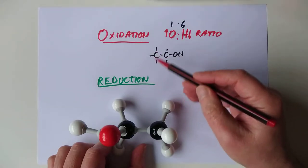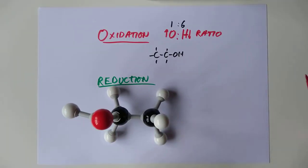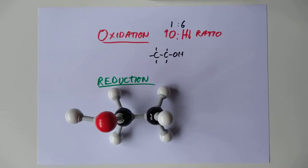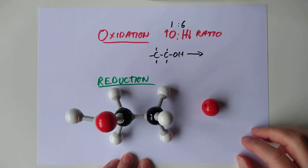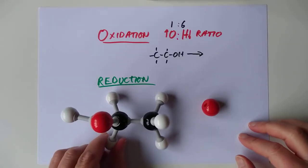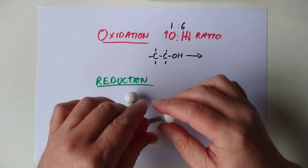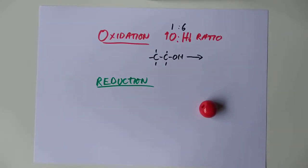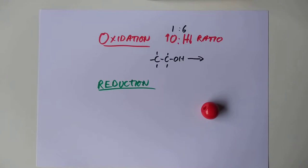If we have some ethanol, the oxygen to hydrogen ratio is one oxygen to six hydrogens. Oxidation is defined as increasing the number of oxygens or decreasing the number of hydrogens, but not changing the carbon skeleton. Here's an oxygen atom from an oxidizing agent. We're going to pop off these two hydrogens attached to this carbon.